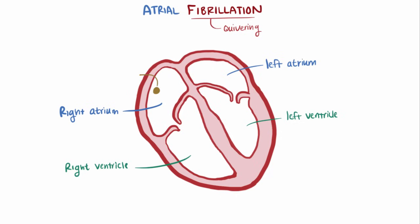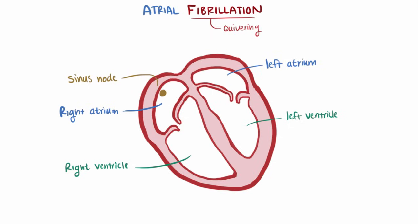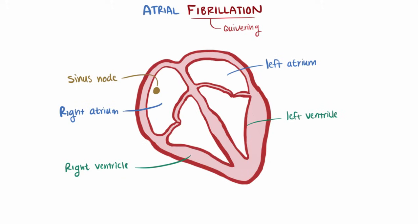Normally an electrical signal is sent out from the sinus node in the right atrium. It then propagates out through both atria super fast, which allows them to all depolarize at about the same time, and you end up with this nice coordinated contraction of the atria. That signal then moves down to the ventricles and causes them to contract shortly after.